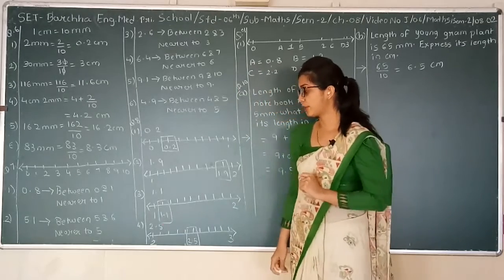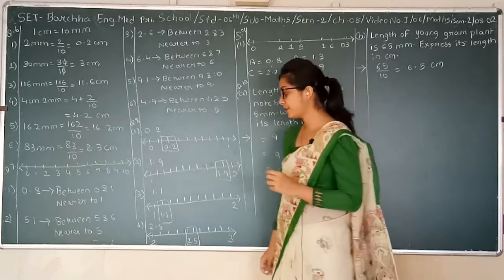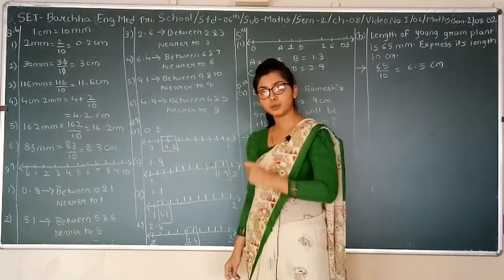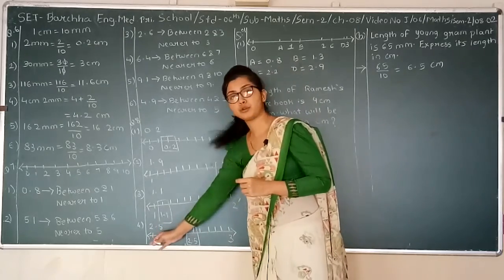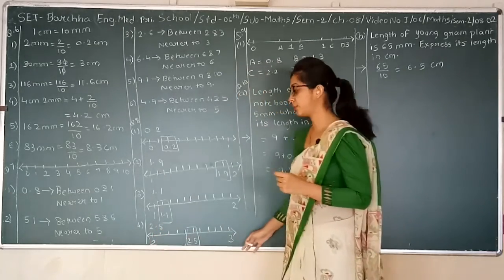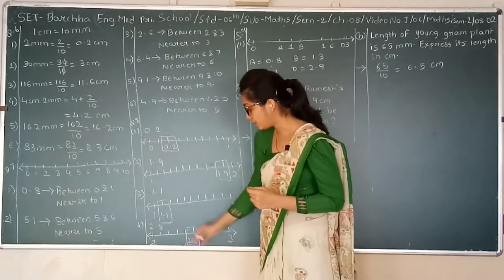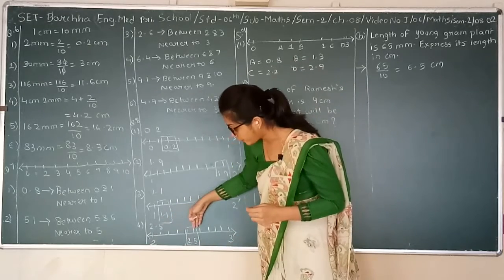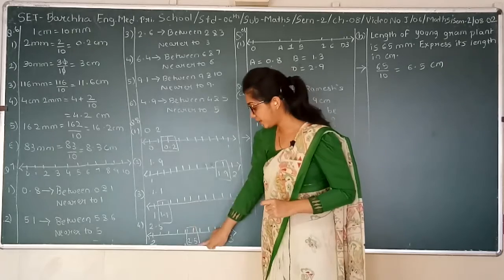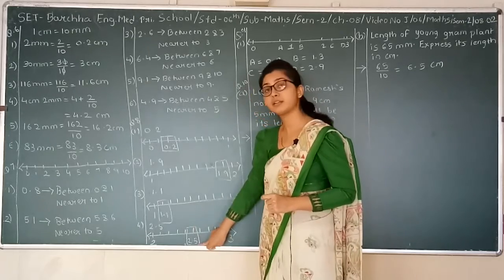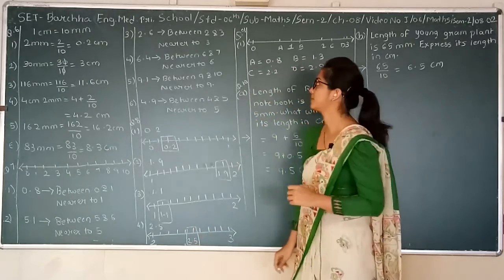Next is 2.5. 2.5 will be between 2 and 3. Draw a number line and plot 10 divisions in between. Count 1, 2, 3, 4, 5 — at the 5th place we will write 2.5. So 2.5 will be the answer.